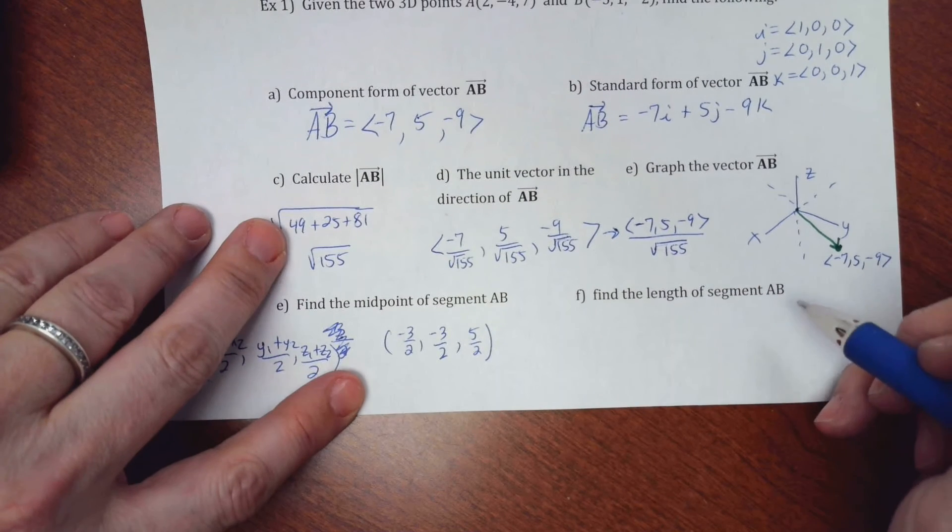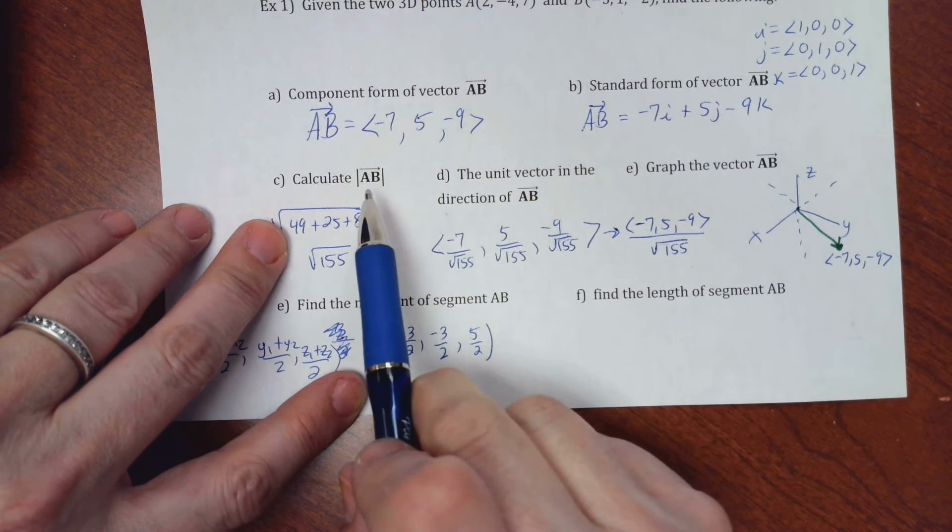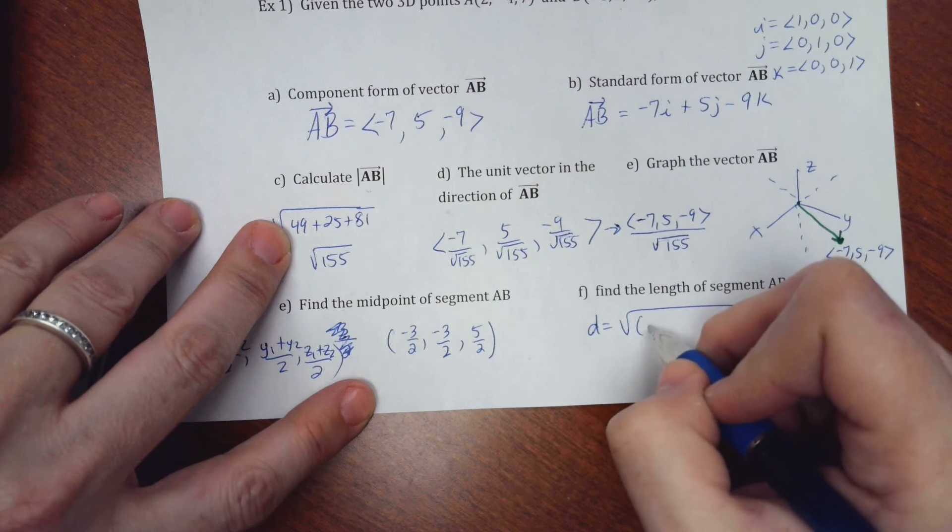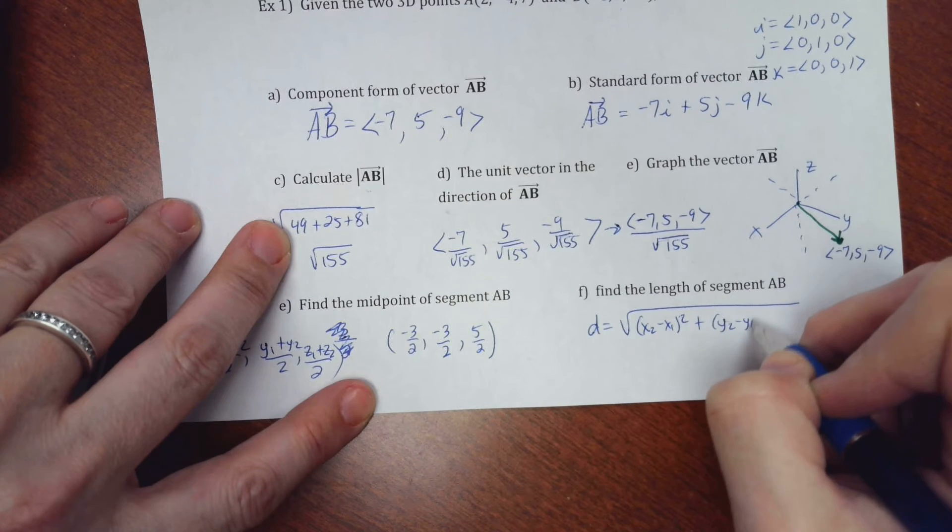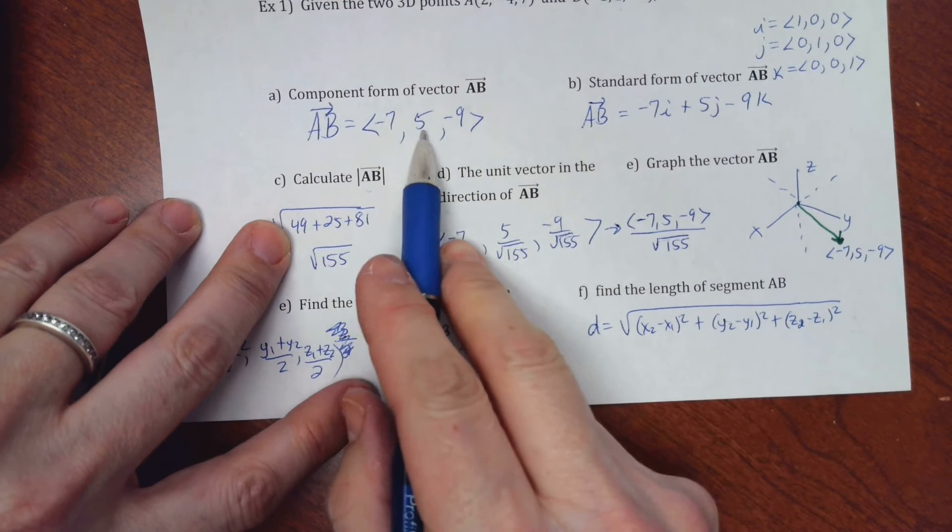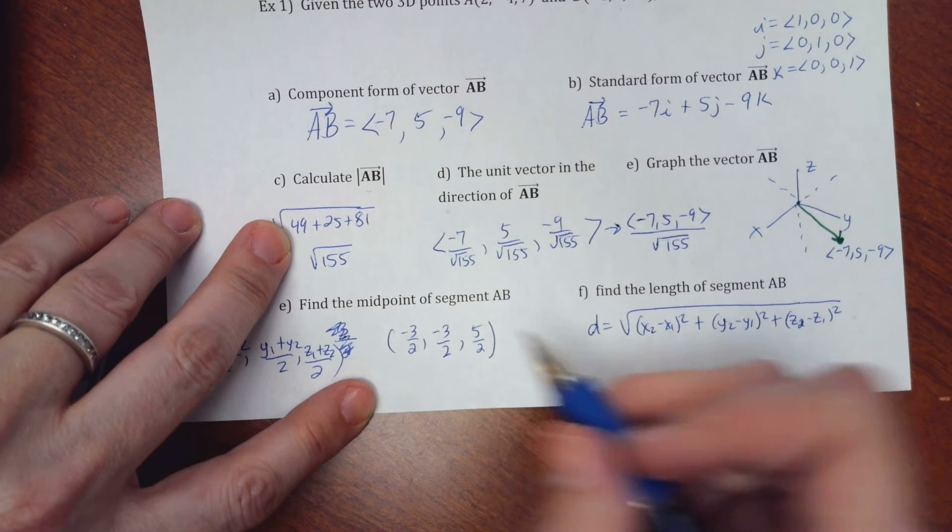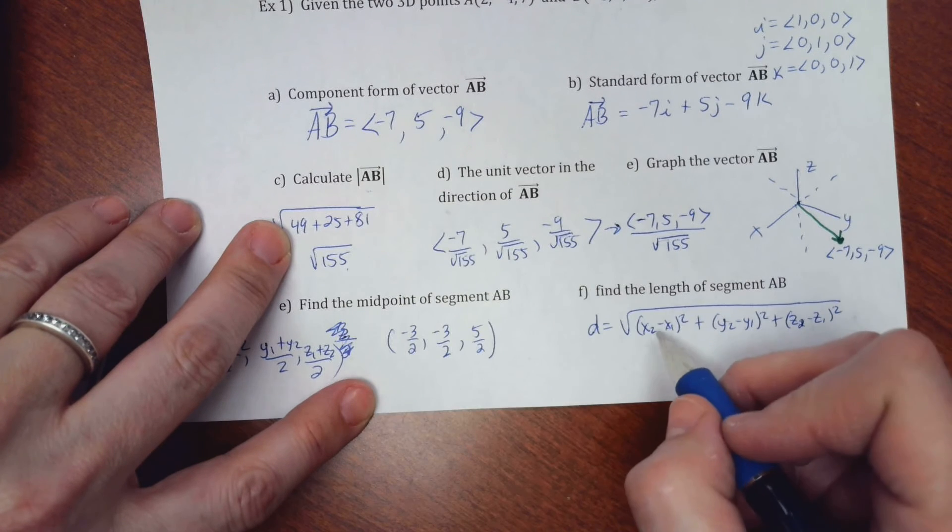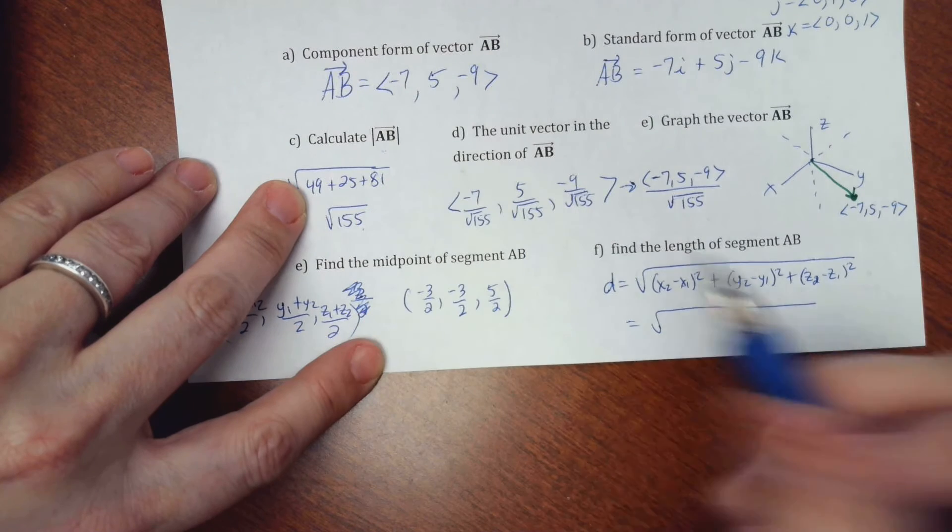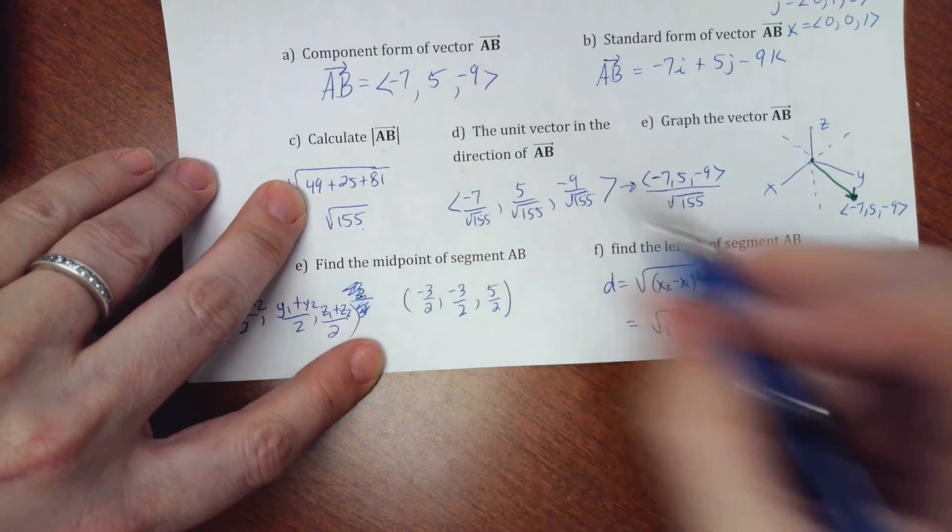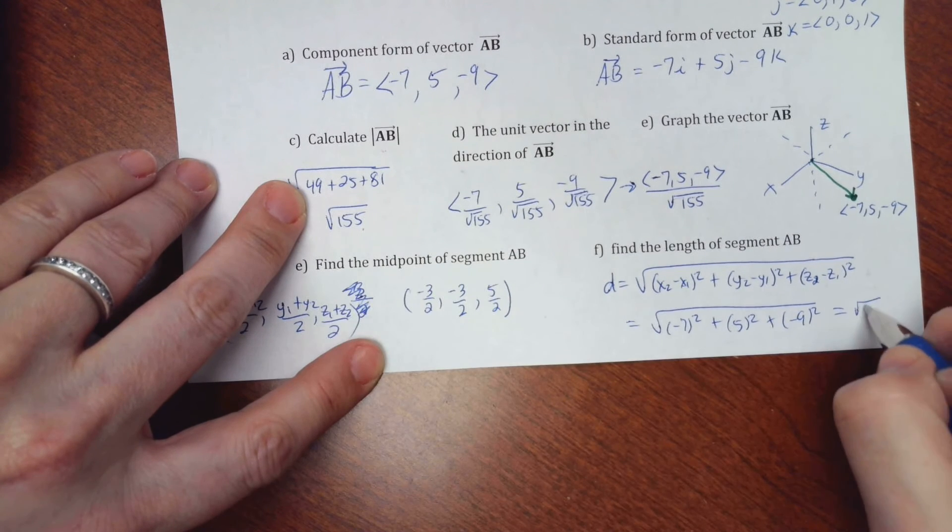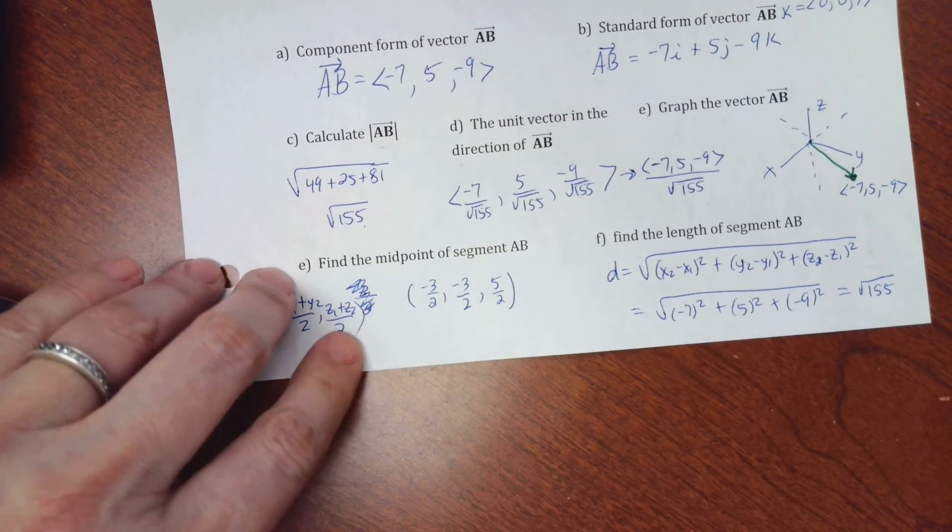Alright. The length of the segment AB. Well, the length of the segment AB is also going to be the magnitude of AB. But you have your distance formula, right? So your old distance formula was this. It was the square root. You did X2 minus X1 squared plus Y2 minus Y1 squared. And so now you just have Z. Z2 minus Z1 squared. But remember, these numbers are that subtraction. So basically, I can just use the magnitude answer right here, because I'm subtracting these values up here and squaring it. So I'm getting the square root of negative 7 squared plus 5 squared plus negative 9 squared, which we know from here is radical 155. So the magnitude is the distance.